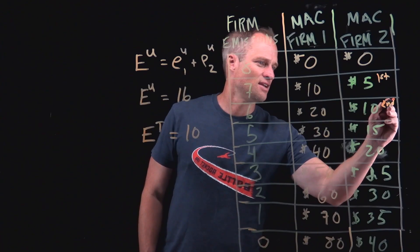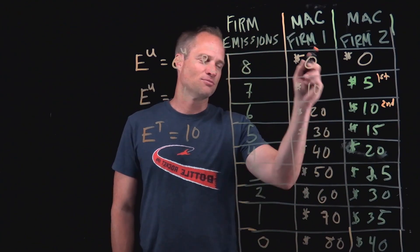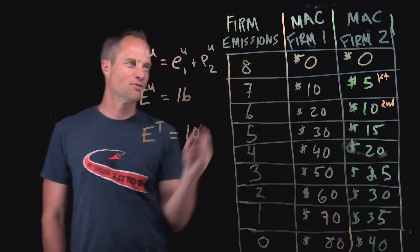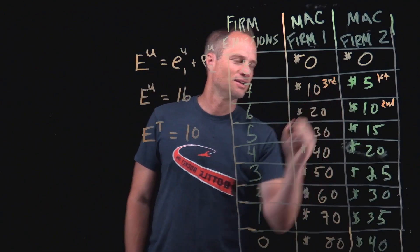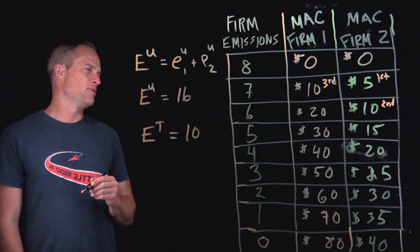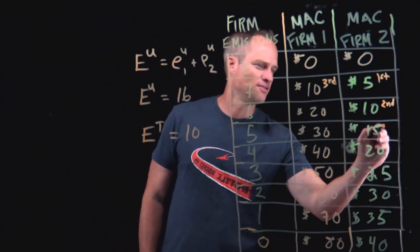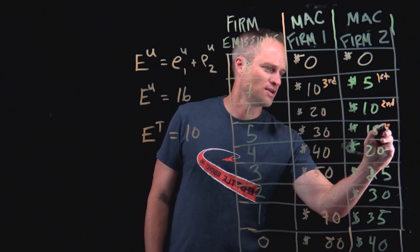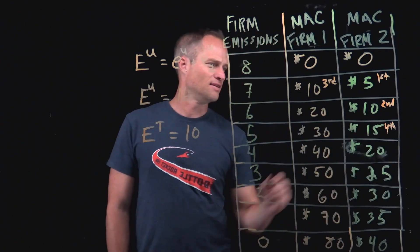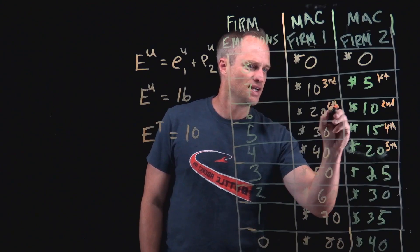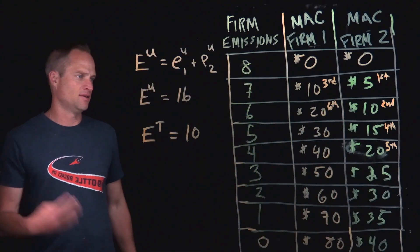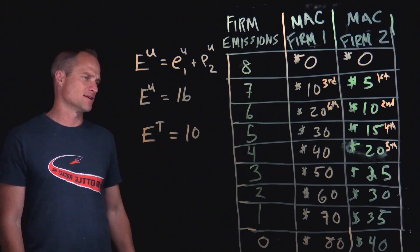And then the second unit of $10, that's kind of a tie to second unit of abatement and firm one's first unit. And so we can put that third unit, remember we need to get to six units of abatement. And then the fourth unit, 15 is less than 20. So we could say that. And then this is the fifth unit and then this is the sixth unit. So this is the cheapest way to abate six units of emissions.